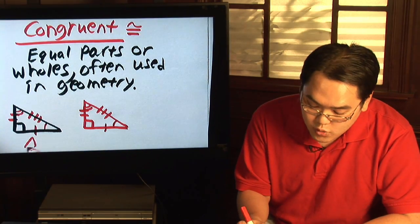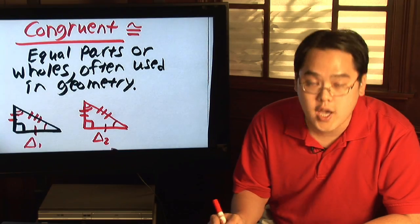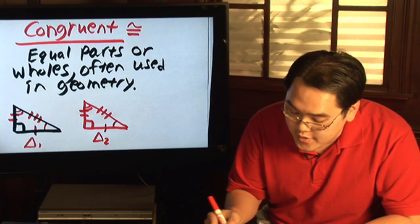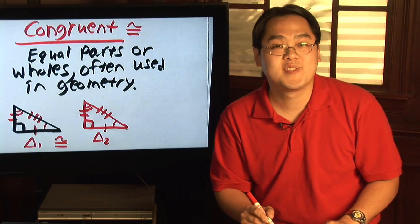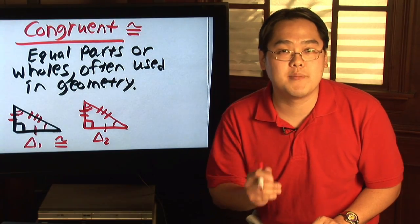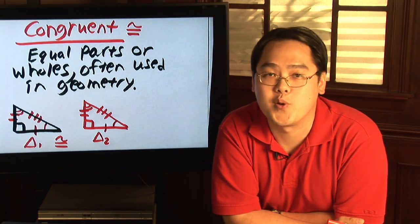And if this was triangle one and this was triangle two, if you want to show that they're both congruent, then you basically use the congruent symbol. So my name is Jimmy Chang and that is the demonstration as to the meaning of congruent.